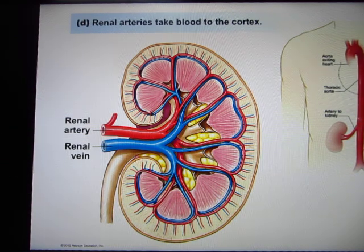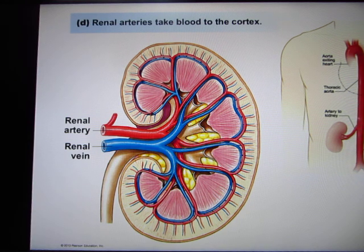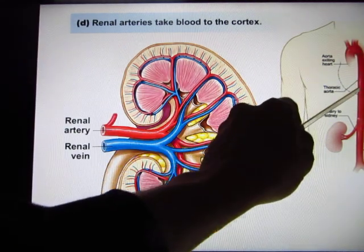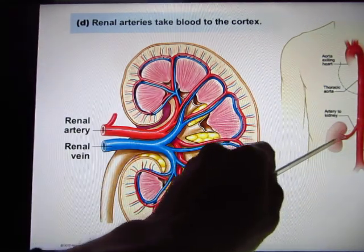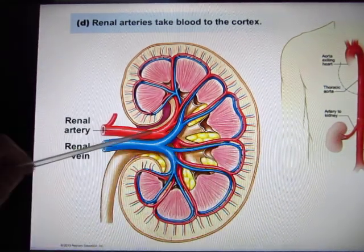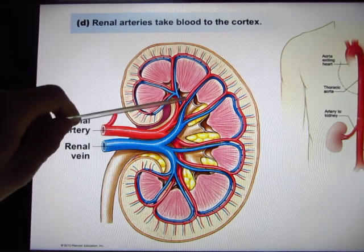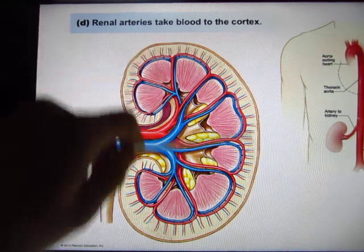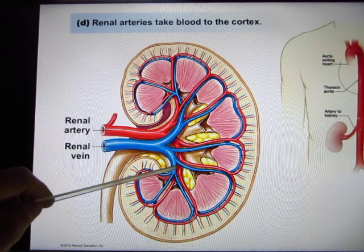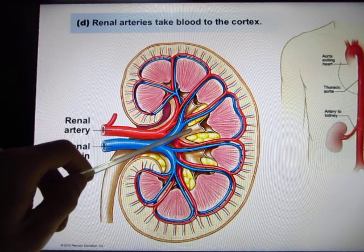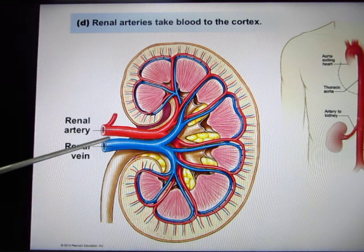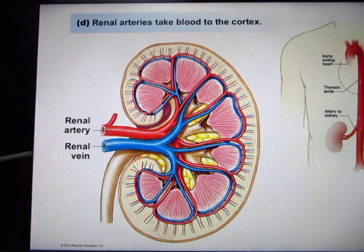Your blood starts from your left ventricle, goes through the aorta, and goes to the descending aorta. It will then go to the renal artery. About 20% of your blood constantly goes to your kidney and will be filtered. After it's been filtered, the clean blood will go through the renal vein and go back to your circulation.